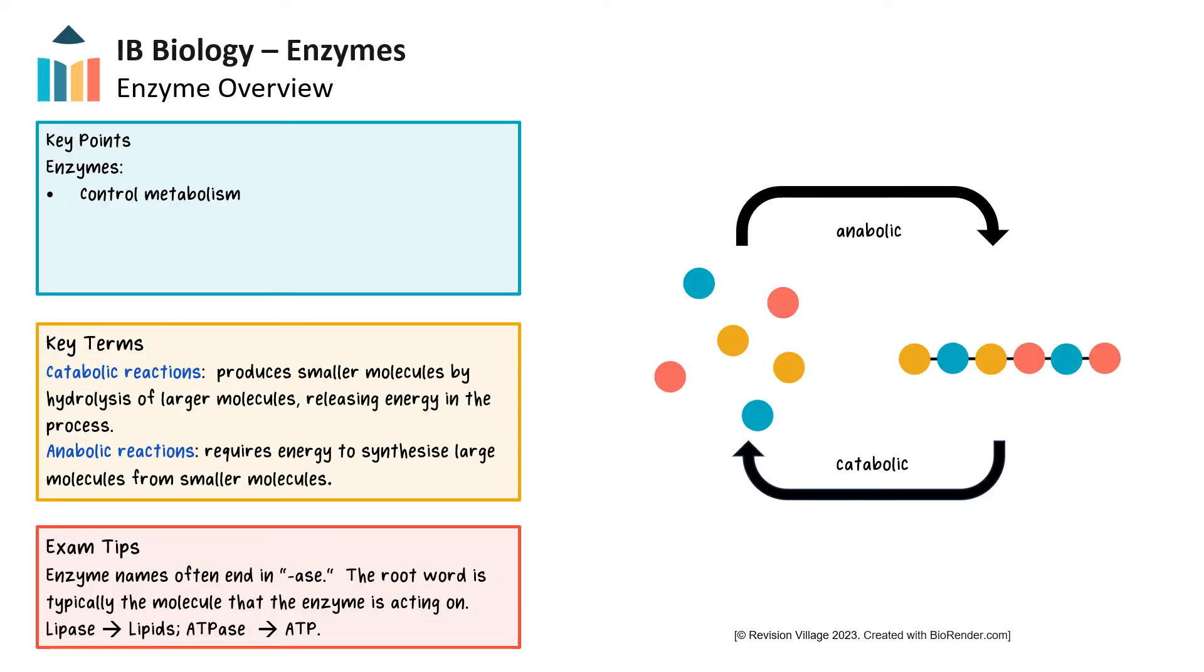All living things depend on chemical reactions which occur inside and outside their cells. These reactions must be tightly controlled in order to maintain life. Enzymes are responsible for controlling almost all of the metabolic reactions keeping us and all living things alive. Enzymes catalyze or speed up biological chemical reactions which both build biomolecules through anabolic reactions and break down biomolecules through catabolic reactions.